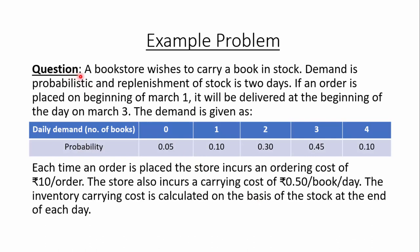The problem says that a bookstore wishes to carry a book in stock. Demand is probabilistic and replenishment of stock is two days — if an order is placed at the beginning of March 1, it will be delivered at the beginning of day March 3. The daily demands can be 0, 1, 2, 3, or 4 with corresponding probabilities. Each time an order is placed the store incurs an ordering cost of Rs.10 per order.